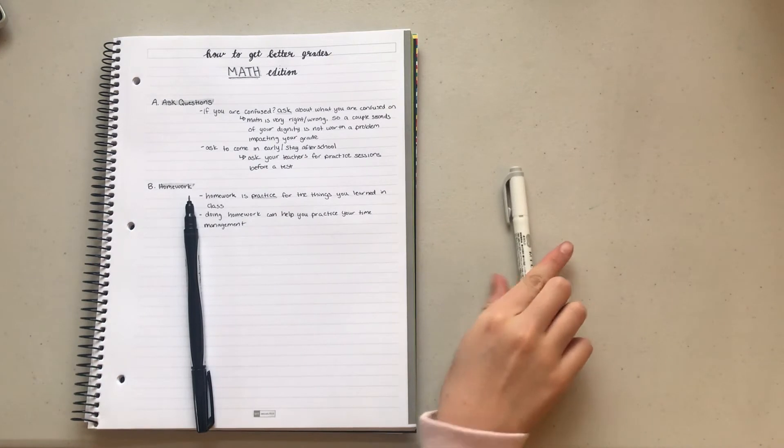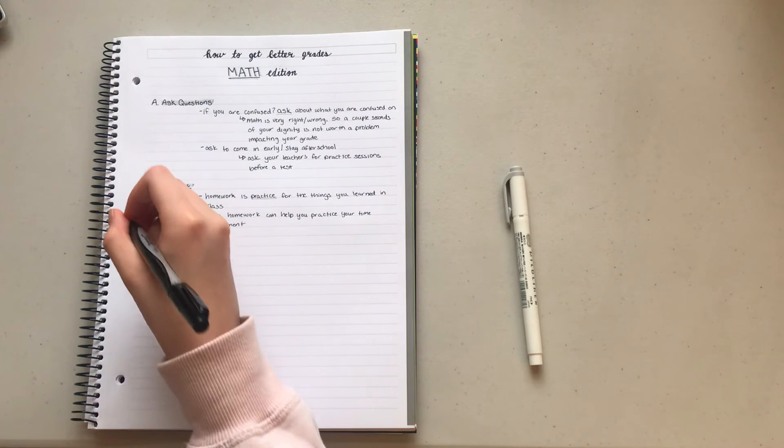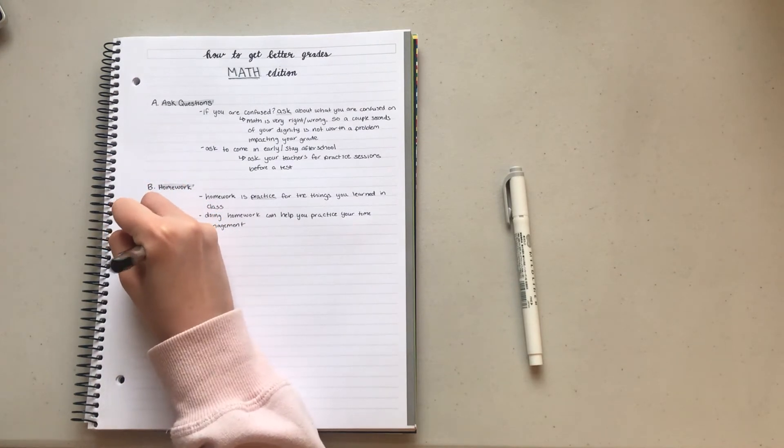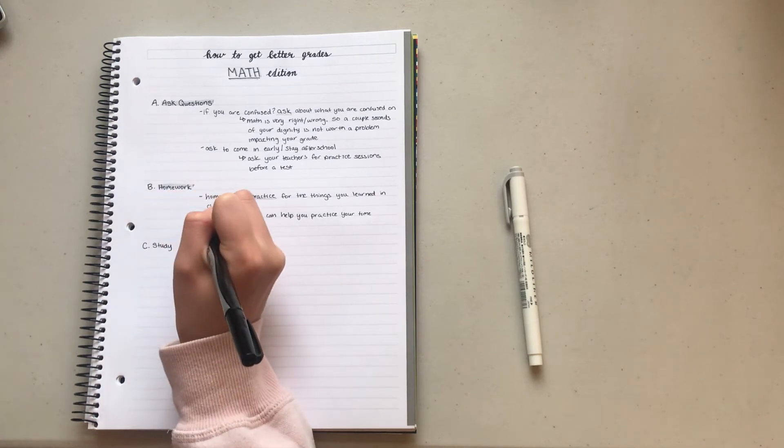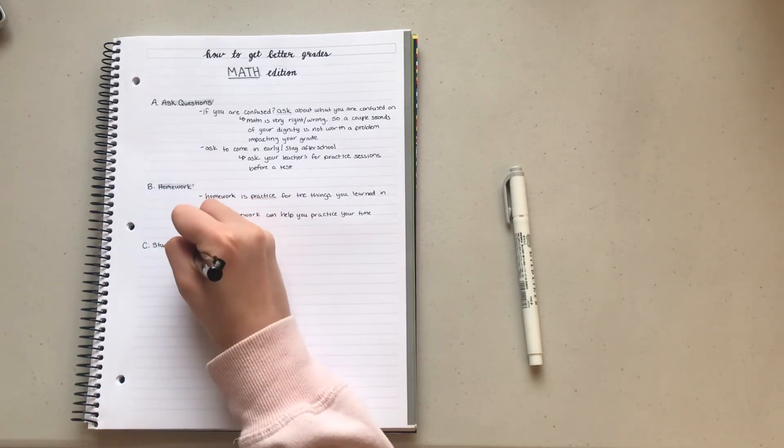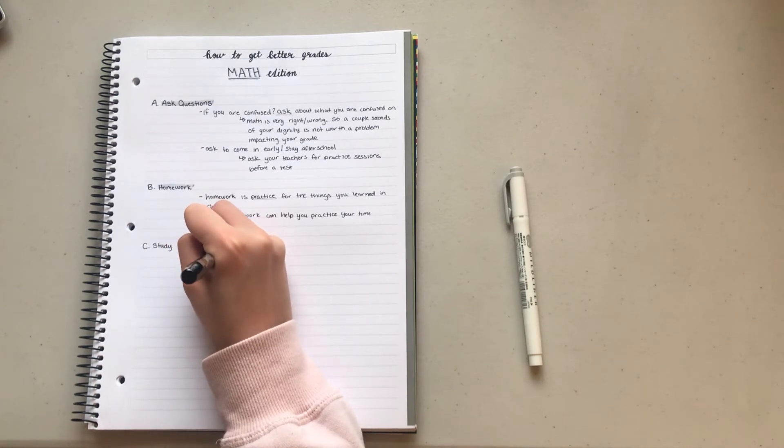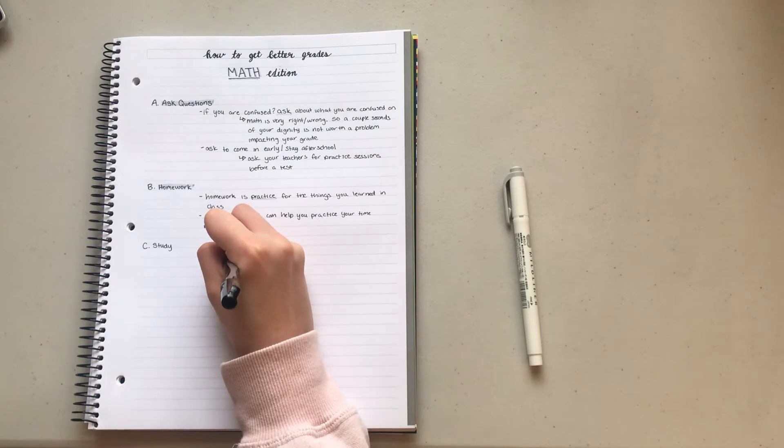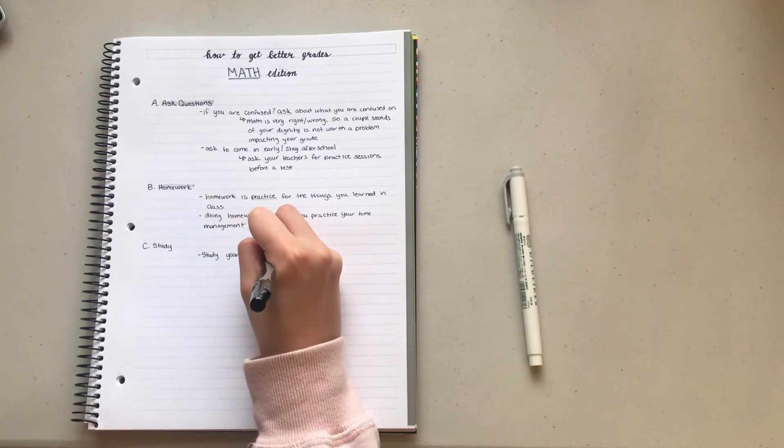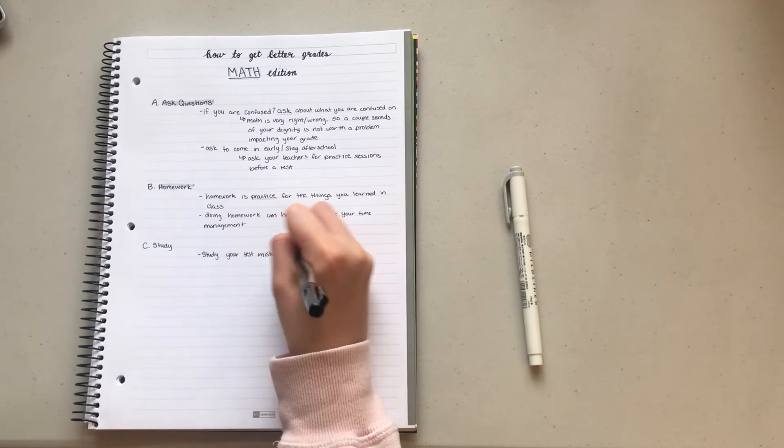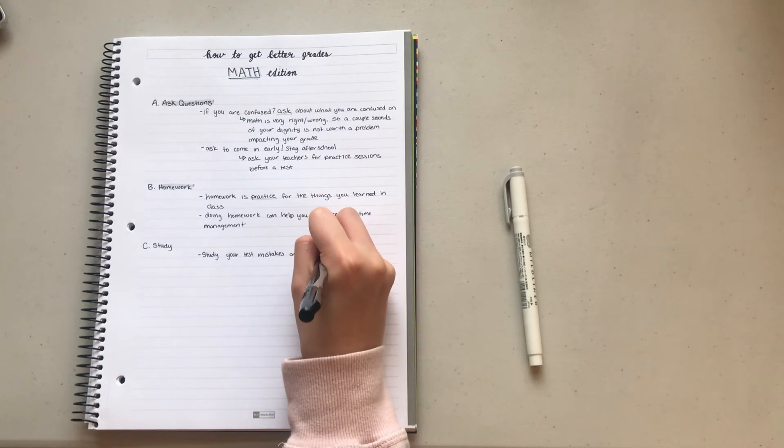The third and probably the most impactful point in this how to get better grades math edition is: study. Study for your tests. The most important part of studying is to study your mistakes, because by looking over your mistakes and correcting your mistakes, you will be less likely to make them, increasing your score.